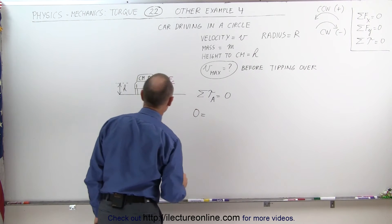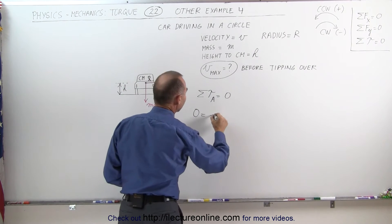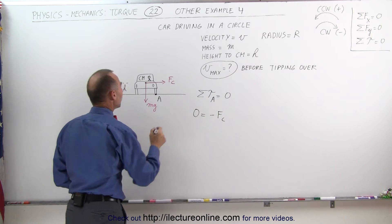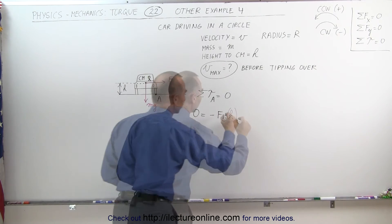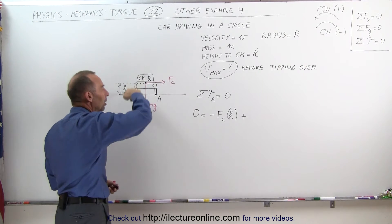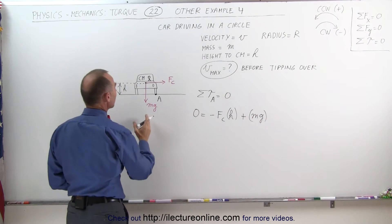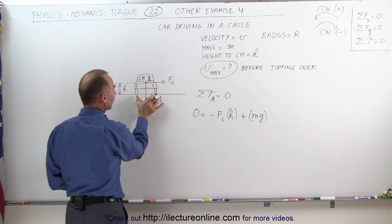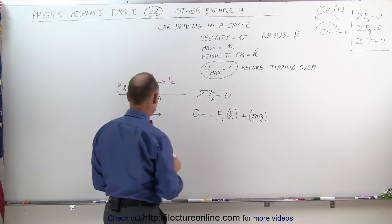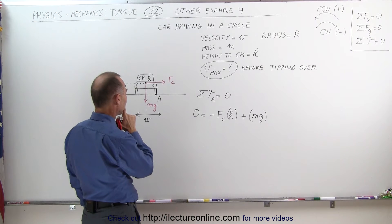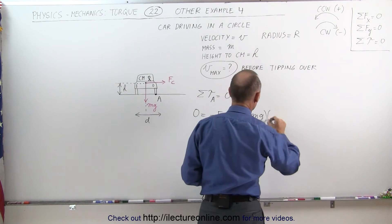Let's find what Vmax is. Summing up all the torques, zero is equal to: the centrifugal force would cause a clockwise motion — that's a negative torque — negative, the centrifugal force times the perpendicular distance from the line of action of the force to the pivot point, which is the distance h. Plus, we have the weight of the car, which causes a counter-clockwise torque — that's a positive torque — plus mg times the perpendicular distance from the line of action of the force to the pivot point. If we call D the width of the car, that perpendicular distance would be D divided by 2.